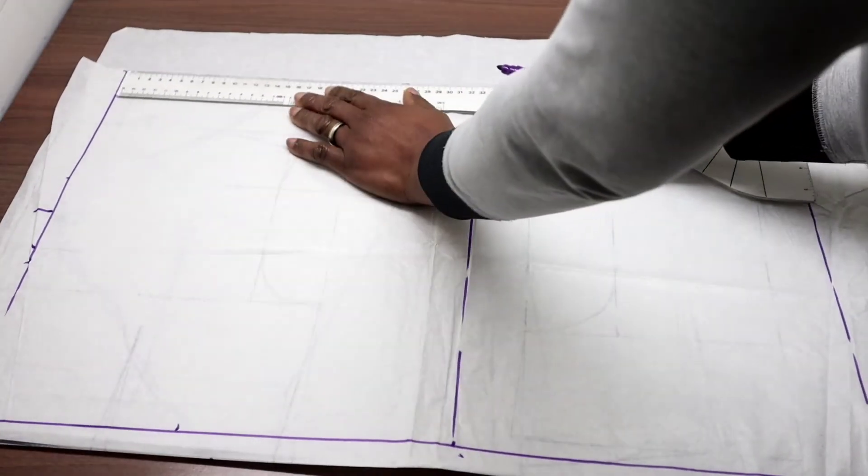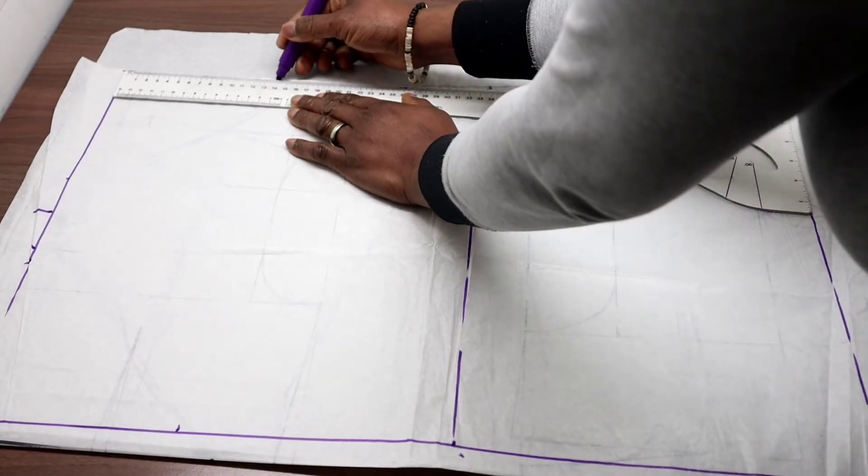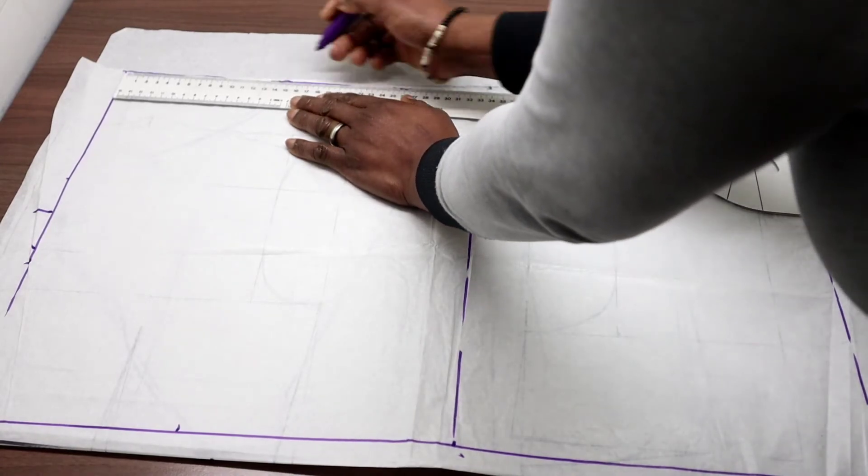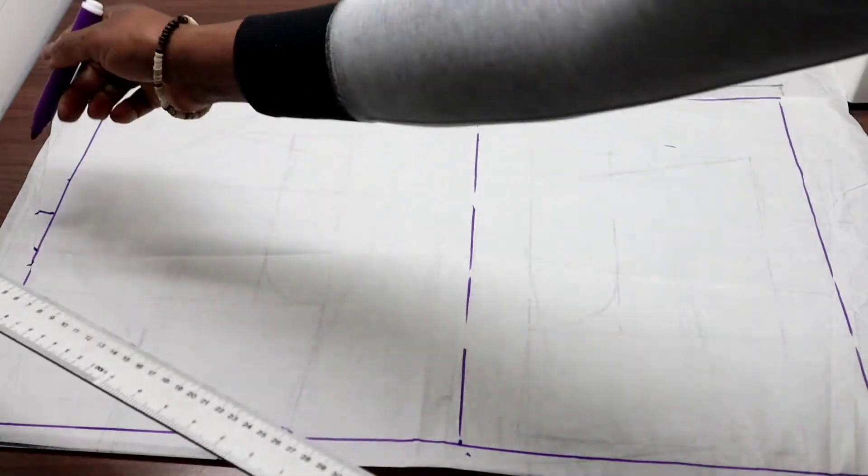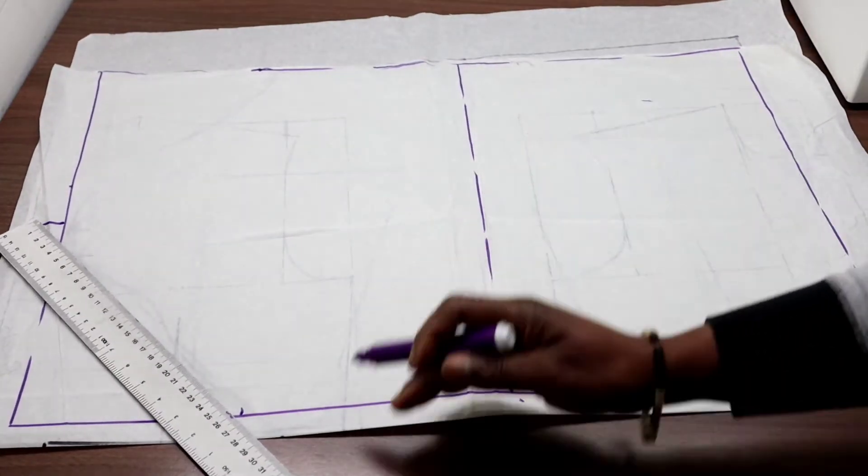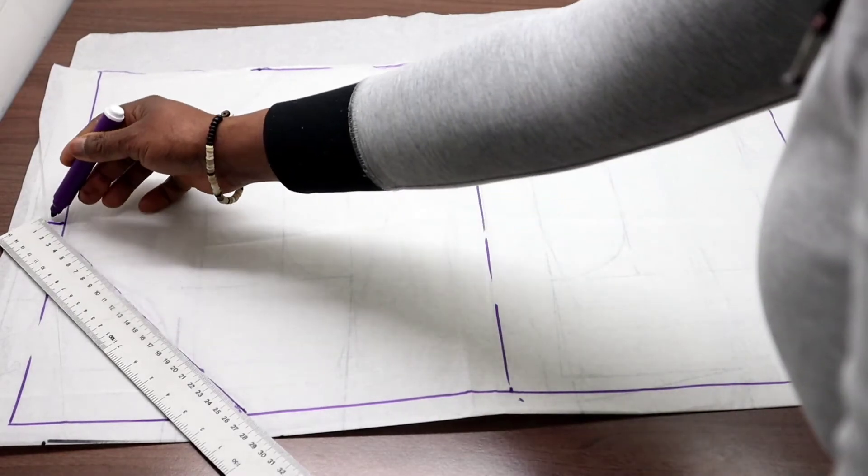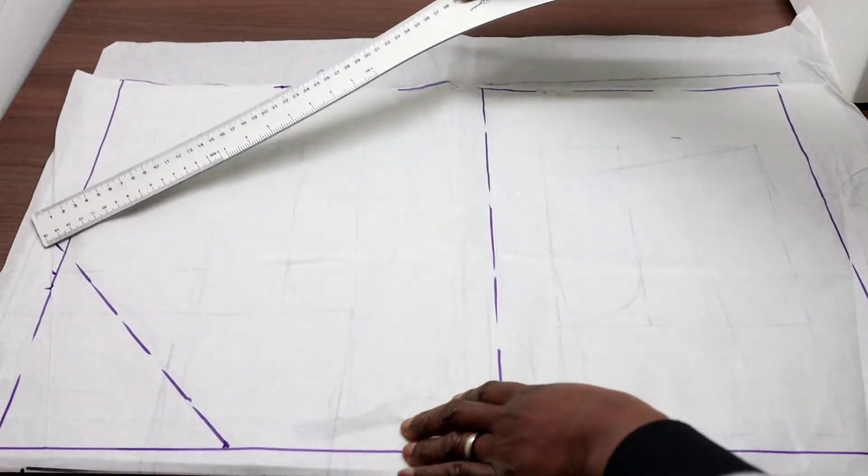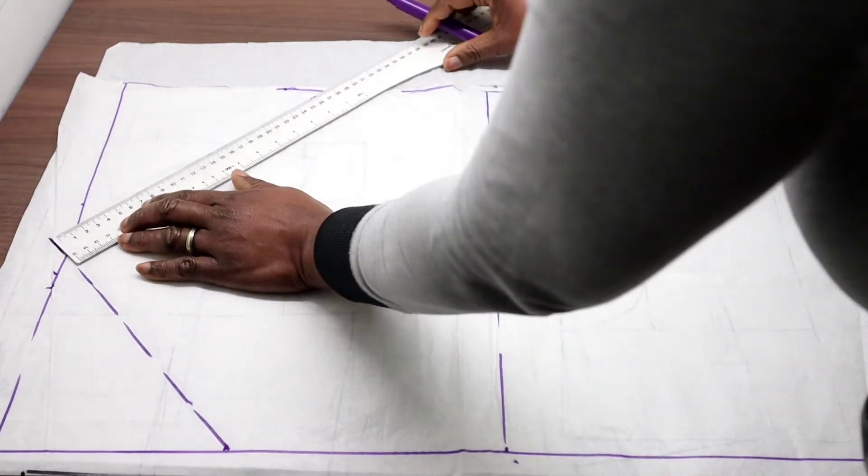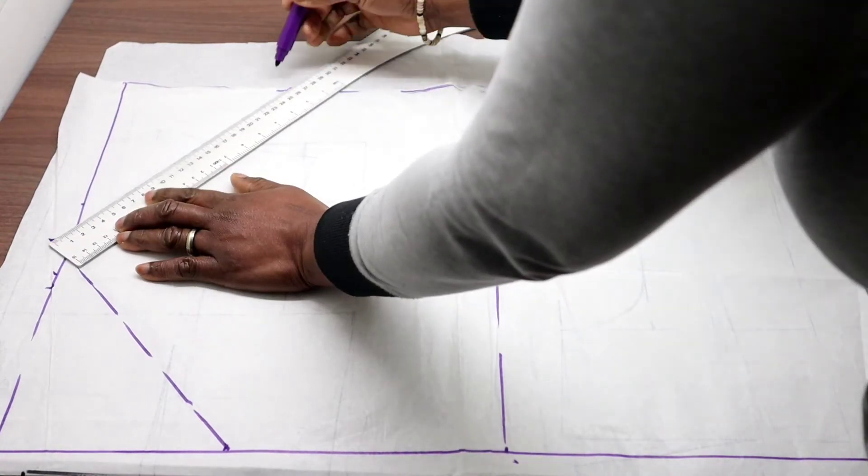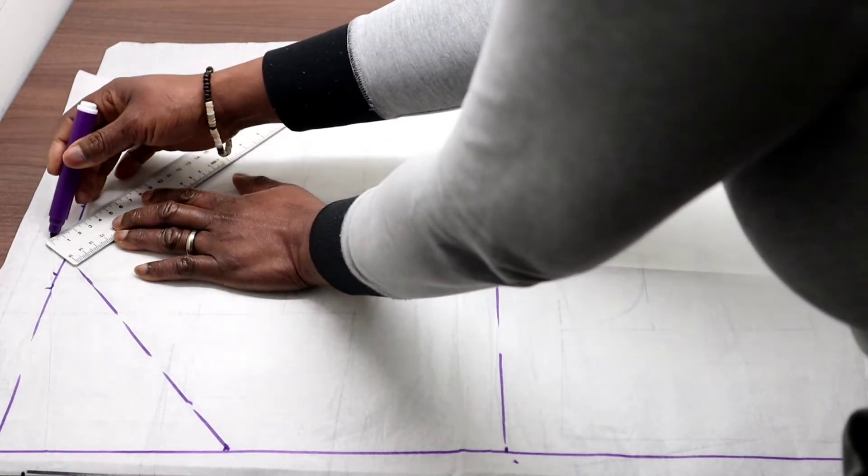On the other side, which is the back side of our sleeve, we will make the same point here. So the next is to connect from the head height to the shoulder seam. We will do the same on the back of our sleeve, from the head height to the shoulder seam.